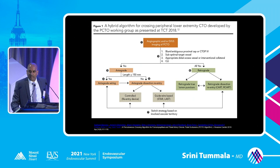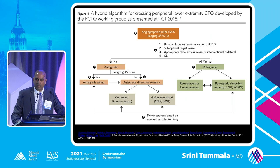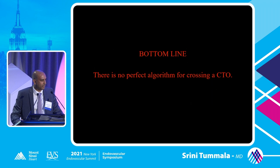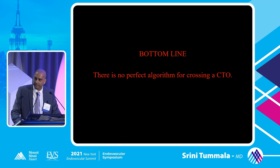A couple years later, the PCTO group led by Dr. Banerjee published an algorithm first presented at TCT in 2018, using angiograms and extravascular ultrasound or EVIS to help determine how to tackle a CTO. With all these algorithms — and there are many more being published — the bottom line is there's no perfect algorithm for crossing a FEMPOP CTO. In the coronaries, there are much more strategic algorithms; I defer to my cardiology colleagues on that.